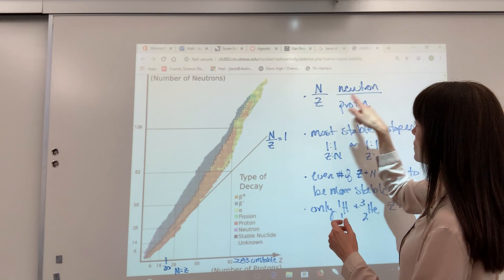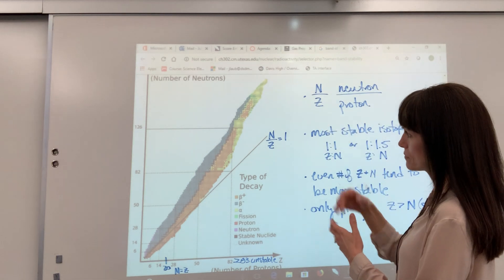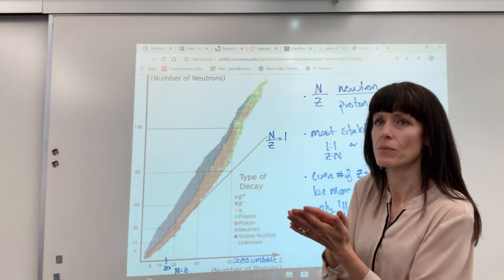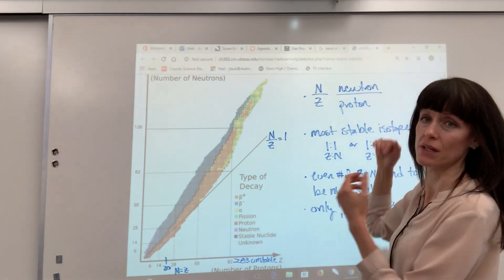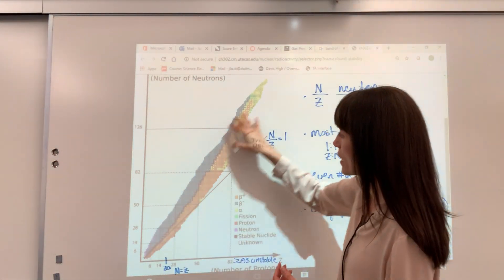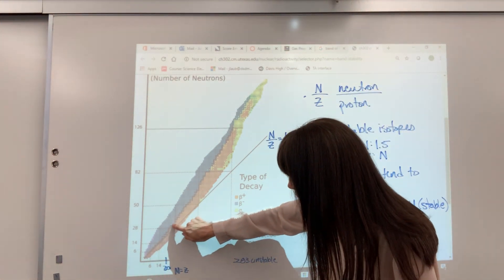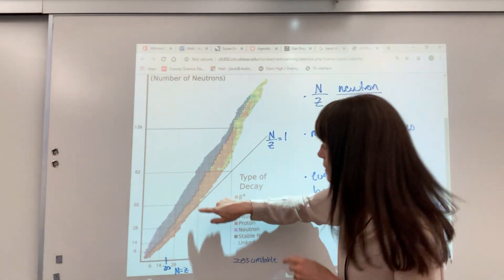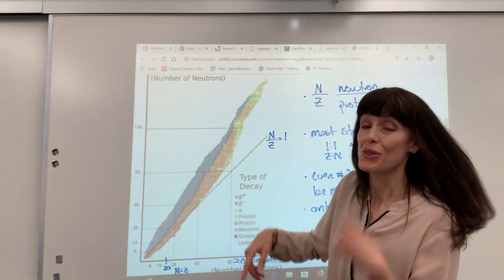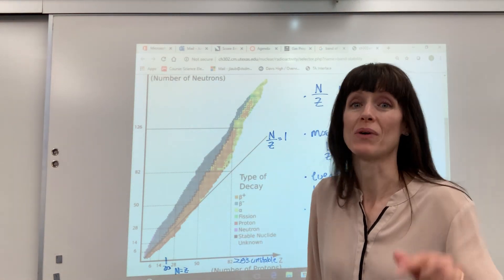So N stands for neutron, Z stands for proton. And what we do is we divide that so that we can get one number. It's the neutron-proton ratio. And then it's been plotted, but it's been color-coded. The black that you see right in here, kind of this like stair-step little zig-zag line, those are the stable isotopes.